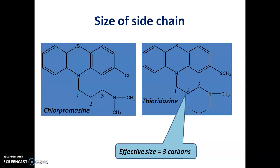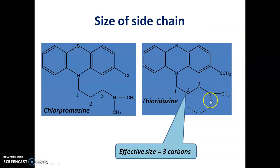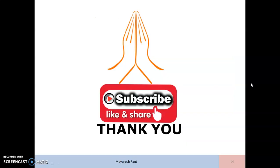In the case of thioridazine, although it contains a piperidine side chain that is cyclic in nature, it also effectively consists of three carbons in the chain. This brings the ring closer to the electronegative group at the second position, so the effective carbon count is three. This is all about the chemistry, mechanism of action, and SAR of phenothiazines. Like, share, and subscribe to my channel ChemKaruna. Thank you for patient listening and happy learning.